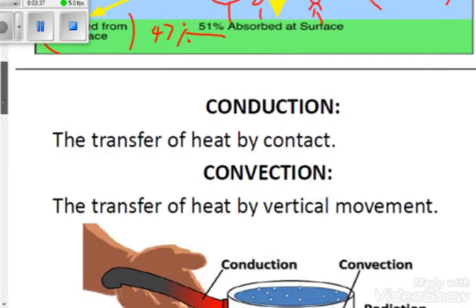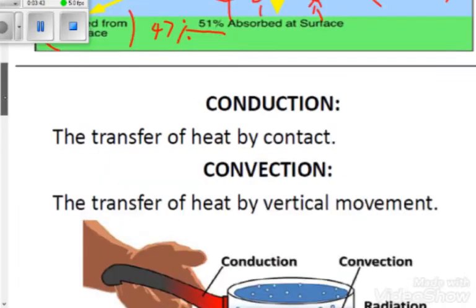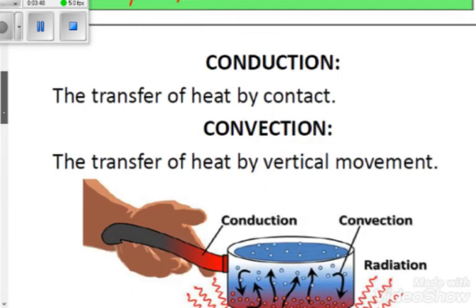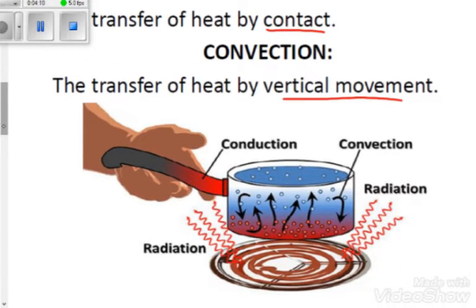From the 51% absorbed at the earth's surface, 4% is reflected back, so we remain with 47% of energy at the earth's surface. Now let's look at the other processes. We've already looked at radiation. Conduction is the transfer of heat by contact — meaning there is a physical connection. Convection is the transfer of heat by vertical movement.